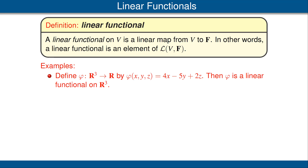Let's look at some examples of linear functionals. Our first example is a linear functional phi from R³ to R, defined by phi of (x, y, z) equals 4x minus 5y plus 2z. The reason we call this a linear functional is that we're mapping into the scalar field R.